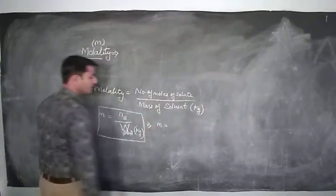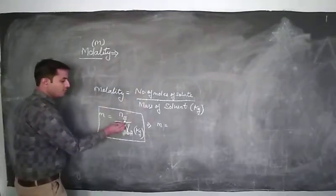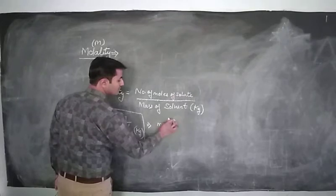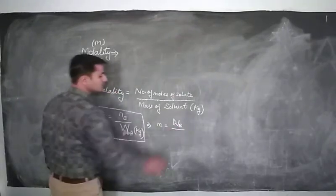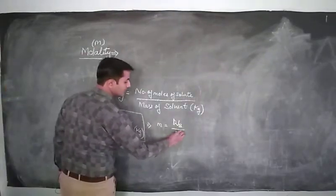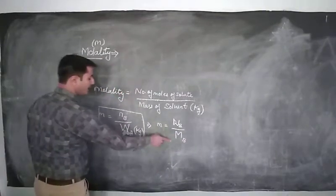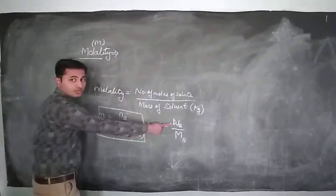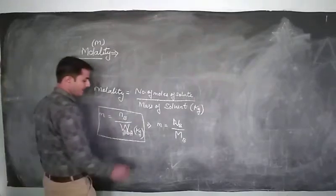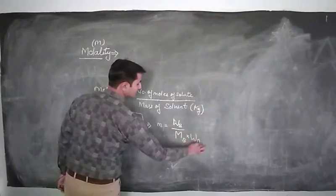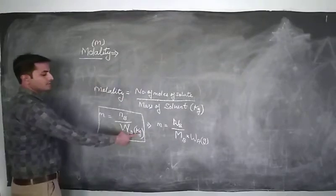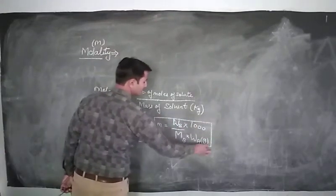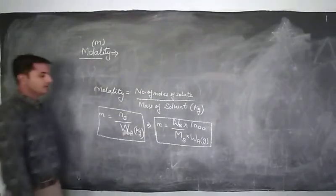To calculate molality, if we don't have the number of moles of solute, we take the given mass of solute divided by the molar mass of solute — that is wB by MB — which gives number of moles of solute. This is divided by weight of solvent in kg. If the solvent mass is given in grams, multiply it by 1000 to convert to kg.